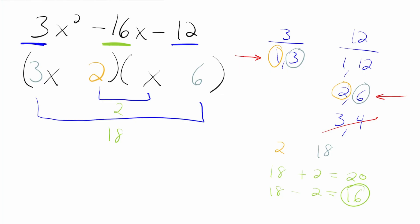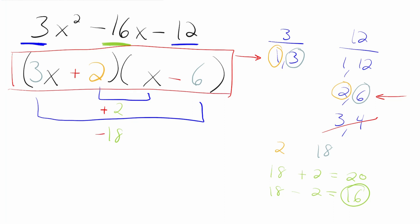The toughest stuff is done — we're finally ready to move on to the signs. All we have to do is figure out what signs we need to give to 18 and 2 so that when they add together they equal that negative 16 in the middle. Since positive 2 and negative 18 add up to negative 16, we know that the signs need to be positive 2 and negative 6. And there you have it — that is the answer to our problem.